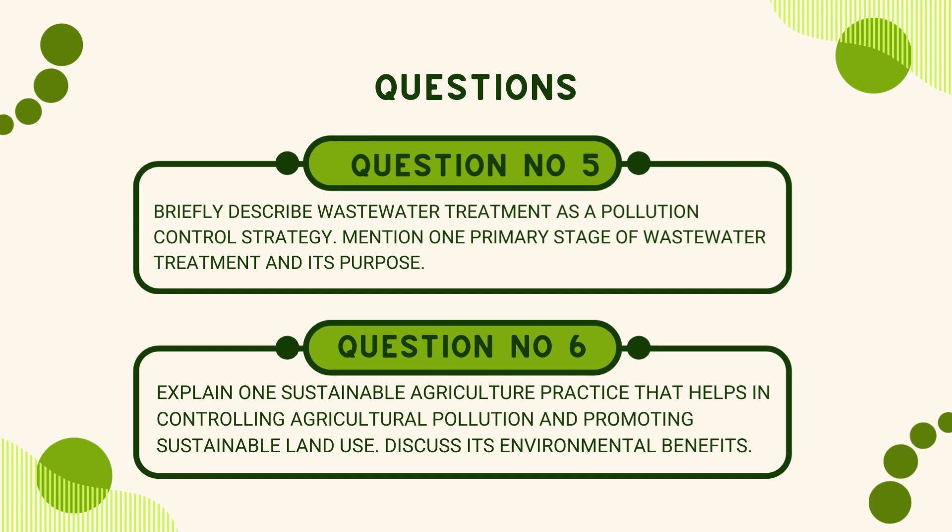Number 6: Explain one sustainable agriculture practice that helps in controlling agricultural pollution and promoting sustainable land use. Discuss its environmental benefits.